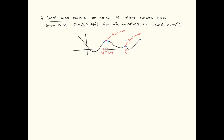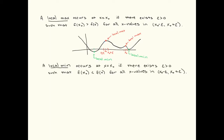There should be a small window from x minus epsilon to x plus epsilon, a small window where the height of the function at the maximum is bigger than all other x values in the interval. As you can see, this graph has multiple local maximums.